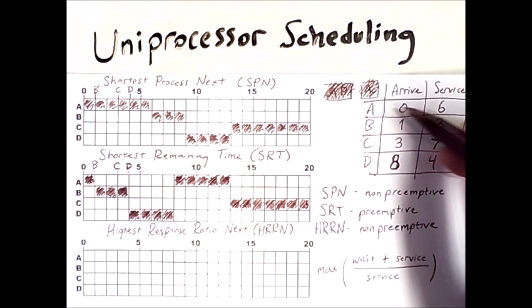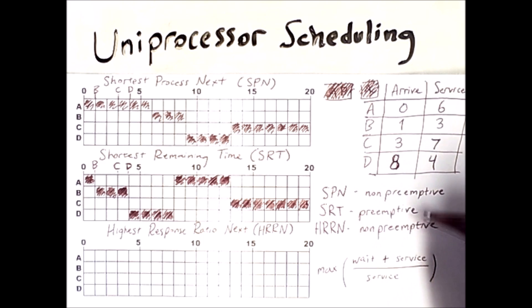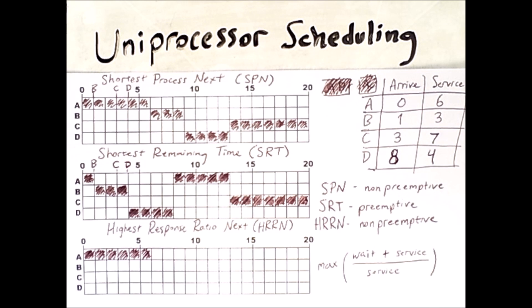At time 0, A is the only process in the system and because HRN is non-preemptive, A simply gets to run for its full six units. But at this point, a decision has to be made and so things get interesting here.